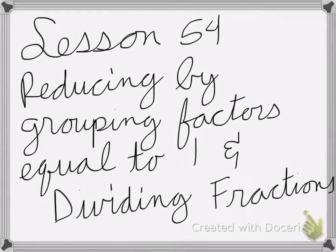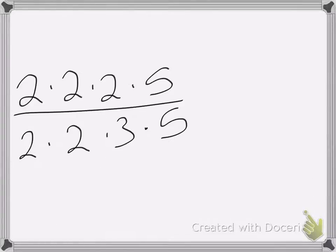All right, so this lesson, lesson 54, is on reducing by grouping factors equal to one and dividing fractions. So here we have this equation, 2 times 2 times 2 times 5 divided by 2 times 2 times 3 times 5. In these problems, we can mark combinations of equal numbers, the same number, to make one.